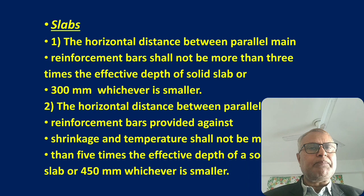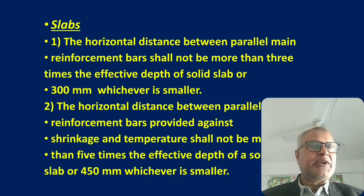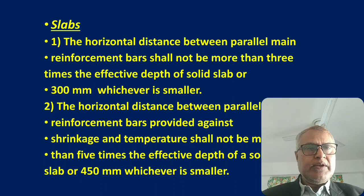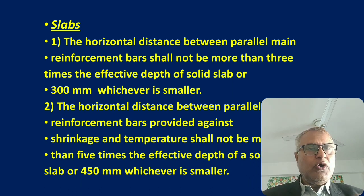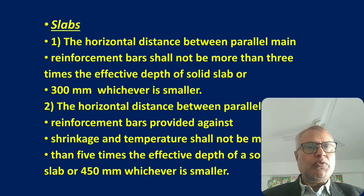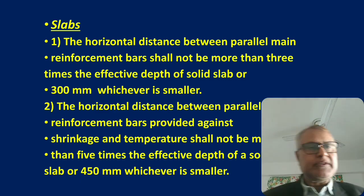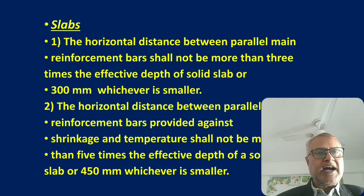The horizontal distance between parallel reinforcement bars provided against shrinkage and temperature shall not be more than five times the effective depth of the slab, or 450 mm, whichever is smaller. So for bars placed from a shrinkage and temperature point of view, take the minimum of 5D and 450 mm when placing the RCC slab reinforcement.